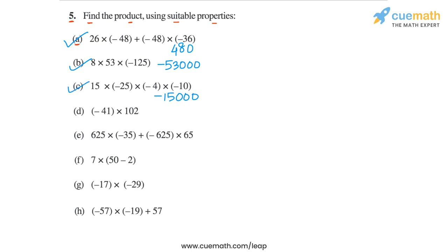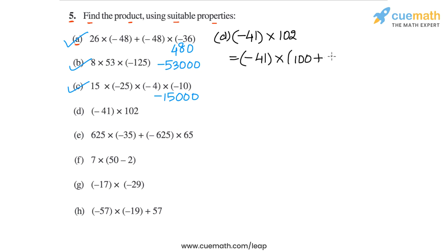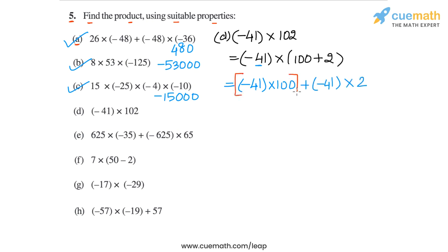Now we go to part D, where we have to calculate minus 41 into 102. We write the second multiplier 102 as 100 plus 2. Then we distribute the first multiplier minus 41 to both terms in the sum, giving minus 41 into 100 plus minus 41 into 2. We then calculate each product and add to find the original product.